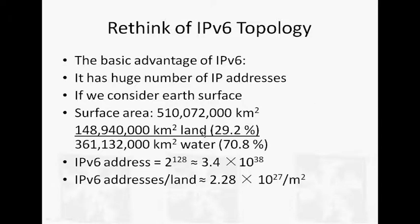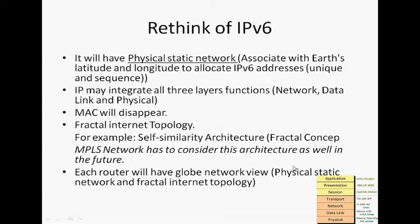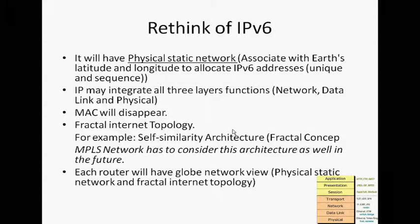Then thinking about a biologic network — DLA inspires the whole body network view, and the network topology is a self-similar architecture. So how to apply this to IPv6 network: the IPv6 network has a huge number of IP addresses. Considering the earth's land surface, we get the following result — even if we have 100-floor buildings, we still have enough IP addresses to support the building network. In the future, more complex functions will integrate to the bottom layer, for example physical topology study associated with earth latitude and longitude to allocate IP addresses. Micro addresses will disappear because of the focal internet topology. Each router will have a global network view because of physical network study and focal internet topology.